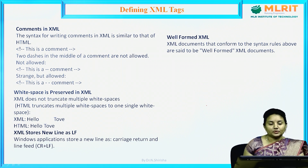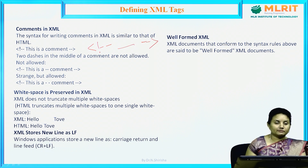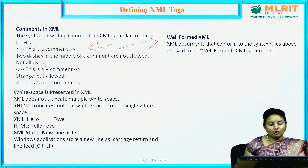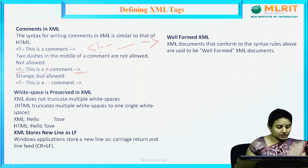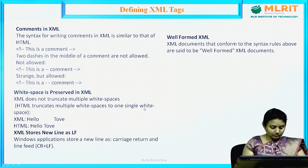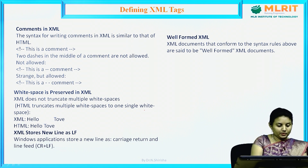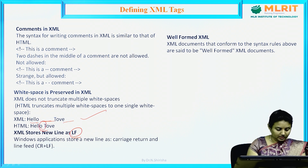Comments in XML are written similarly to HTML: starting with exclamation mark and two hyphens, and closing with two hyphens and the closing angle bracket. Two dashes in the middle of a comment are not allowed. White space is preserved in XML — XML does not truncate multiple white spaces. If you write 'hello    world' with extra spaces, it will be stored and printed as-is. XML stores a new line as LF (line feed).